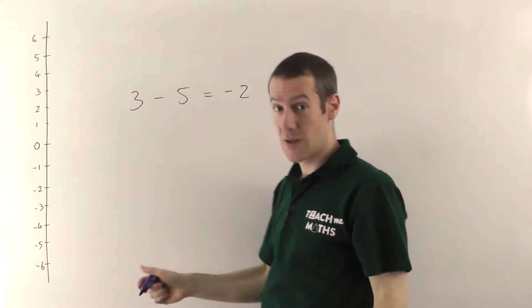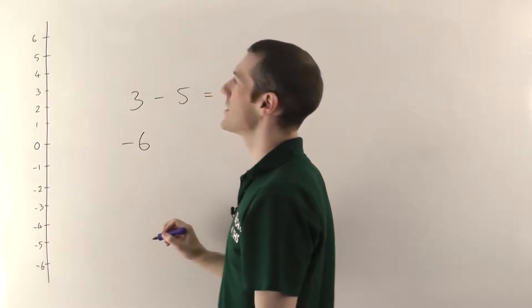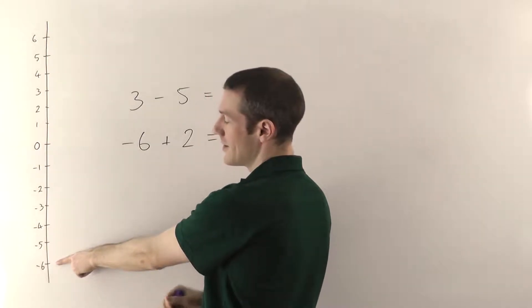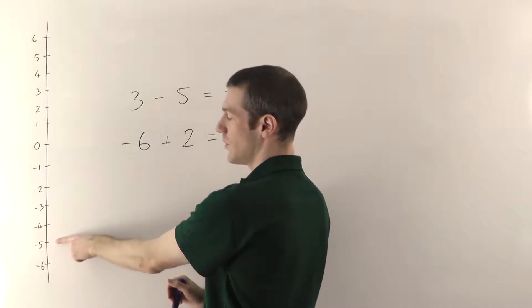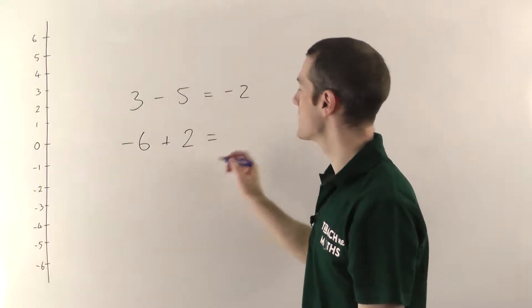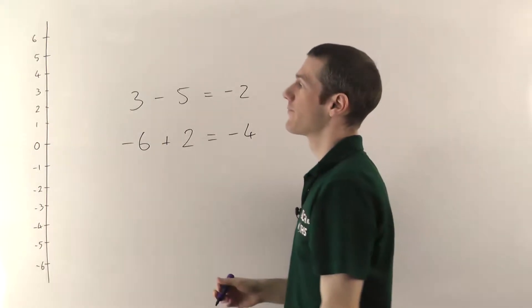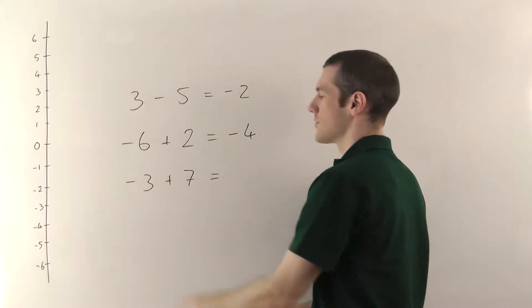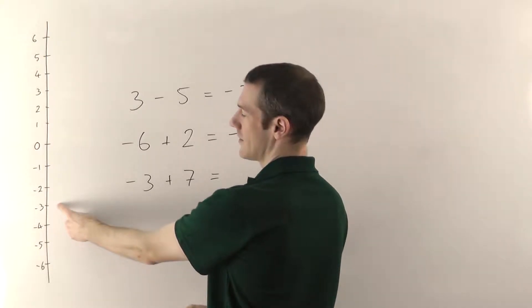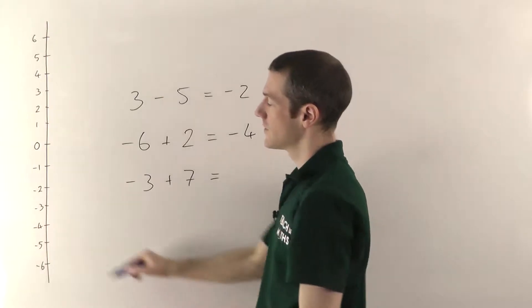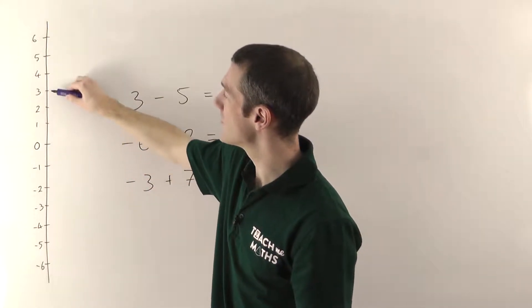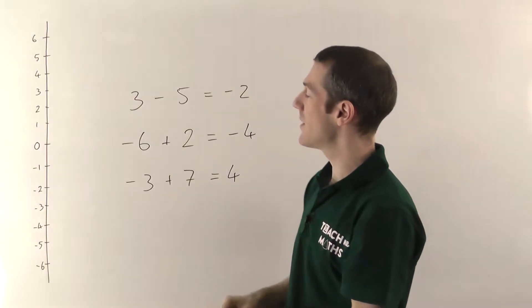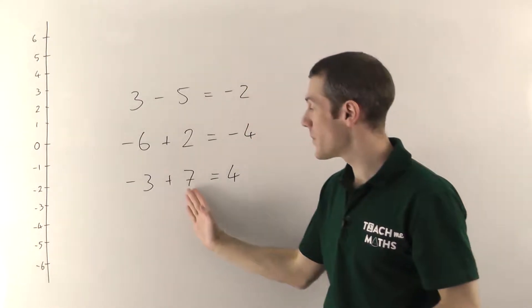With adding and subtracting, that's all you're doing — going up and down on a number line. Another example: starting at minus six and adding two. Go up by two: one, two — you get to minus four. So minus six plus two is minus four. One more: minus three plus seven. Start at minus three, go up by seven — one, two, three, four, five, six, seven — you end up at four. So minus three plus seven is four.